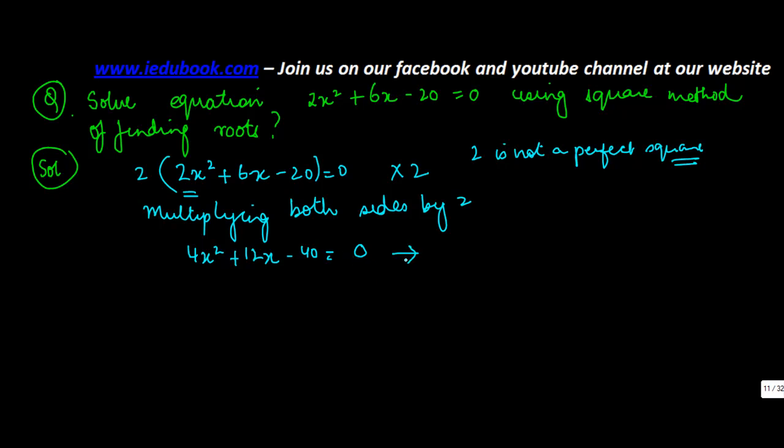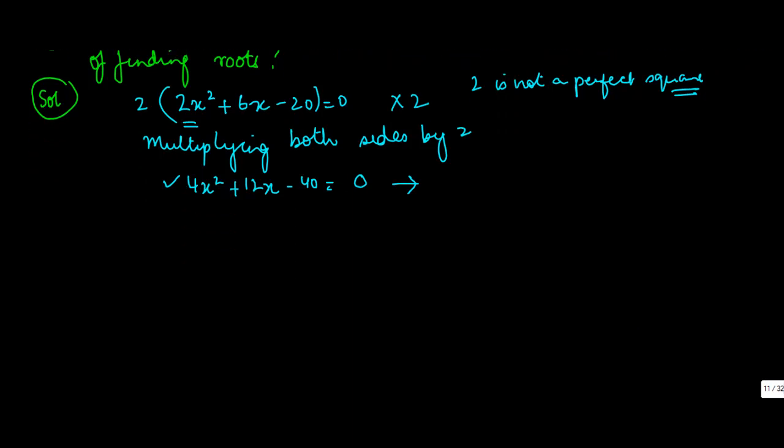So I got an equation where the coefficient of x² is a perfect square. After this the method remains the same. 4x² plus split this into two equal parts: 6x + 6x - 40 = 0.